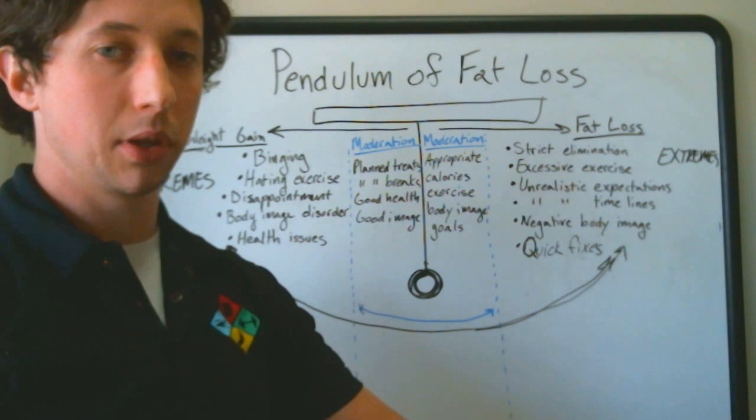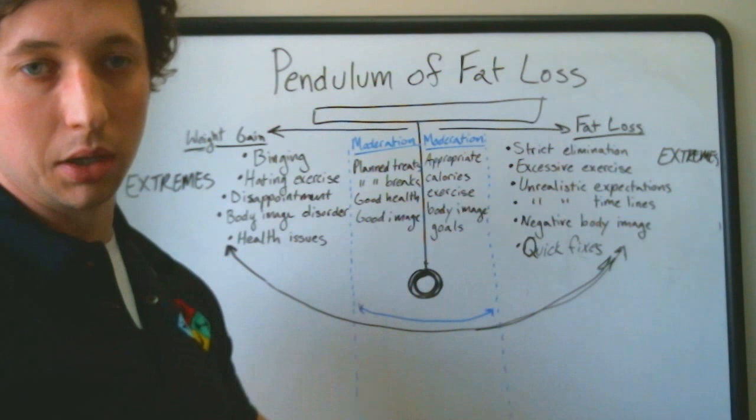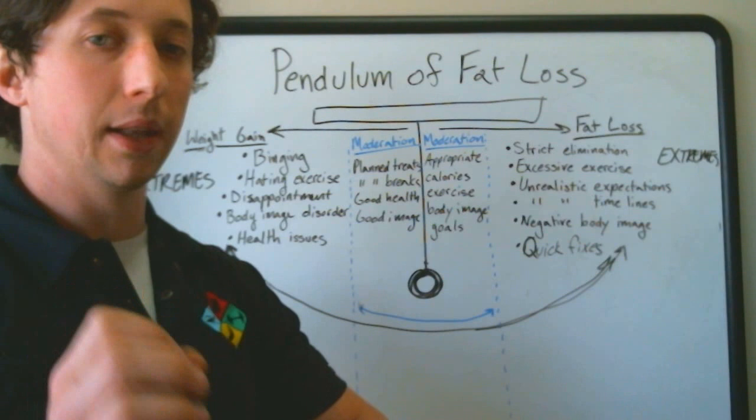When you use extremes, the pendulum will always swing the other way. This happens with anything in life, but it's especially true with fat loss. If you keep it swinging in the sweet spot here, you have what I call a lifestyle change, which is different than a diet and something that you're going to be able to see permanent and lasting results.